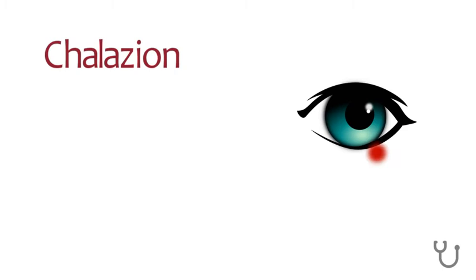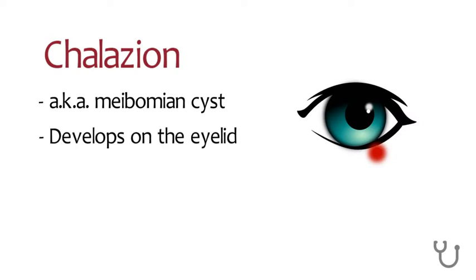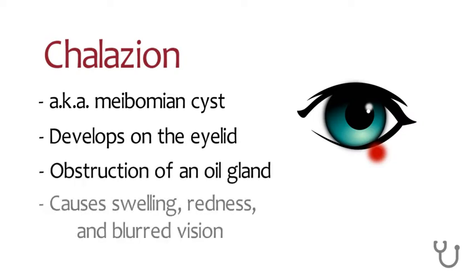A chalazion, also known as a meibomian cyst, is a type of cyst that develops on the eyelid due to obstruction of an oil gland. Chalazions can cause swelling and redness in the affected eyelid and can even put pressure on the eye and cause blurred vision.